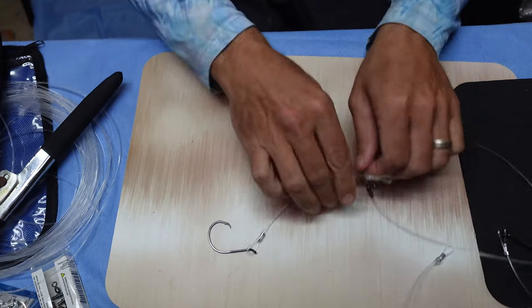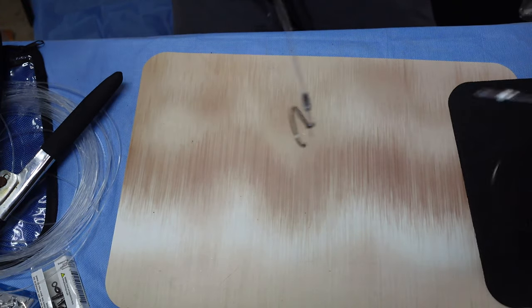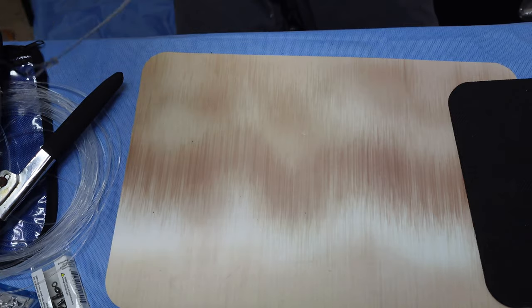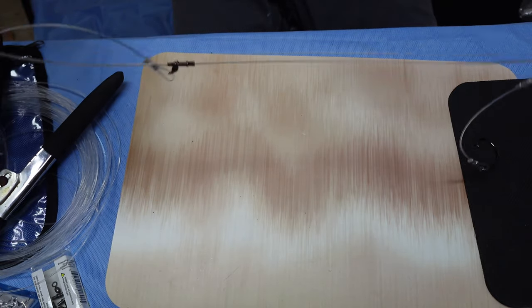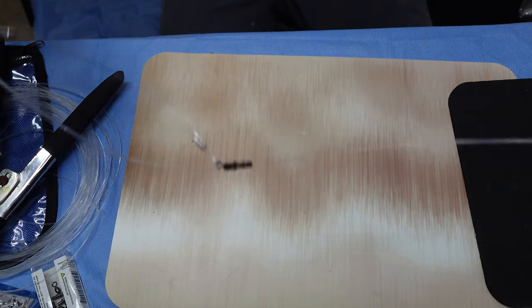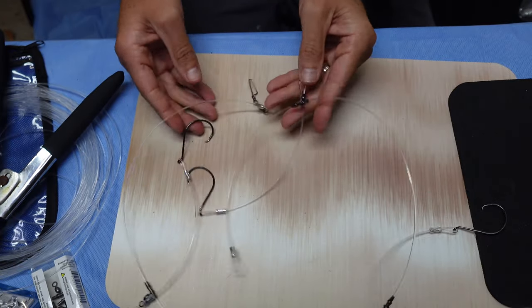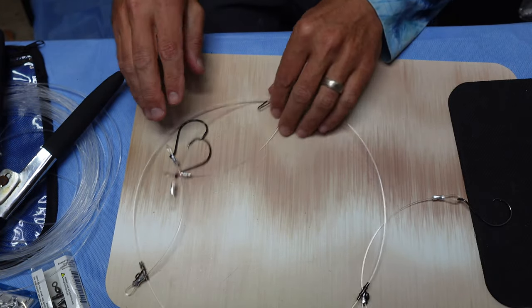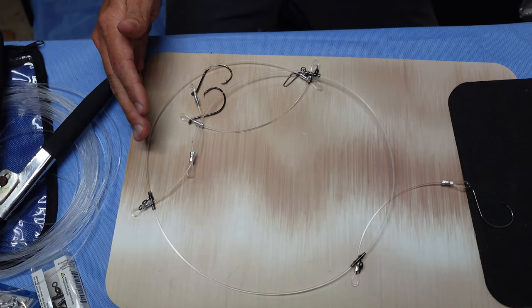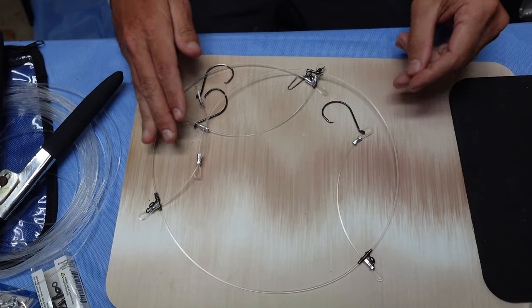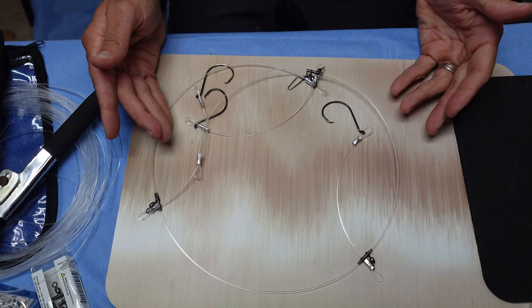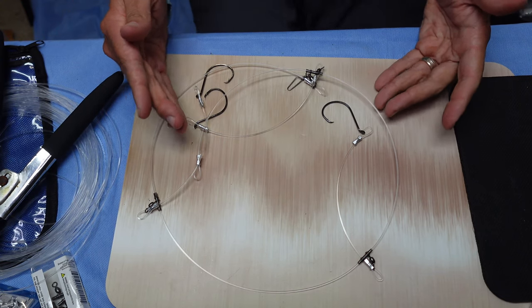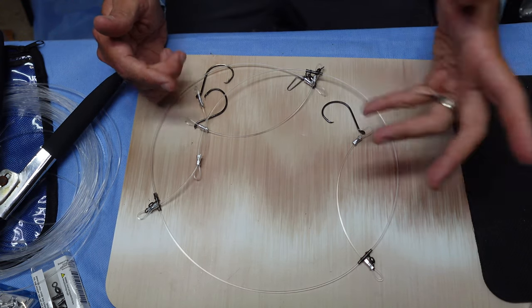So here we go, our rig is done. Let me show you it. Three hook deep drop rig. Made that in what? Didn't take more than like six seven minutes. I'm just talking a lot so it normally takes me five minutes to make these rigs and it's probably under five bucks to make this rig and you can make it how you want.